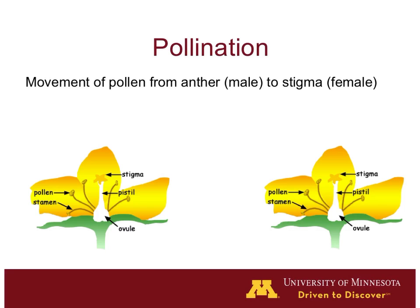Dr. Watkins is going to talk more about this later on in the course, but for now, pollination is simply the movement of pollen from the anther — which is the male part of the plant that produces the pollen — to the stigma, which is the female part of the plant that receives the pollen, as shown in this diagram here.